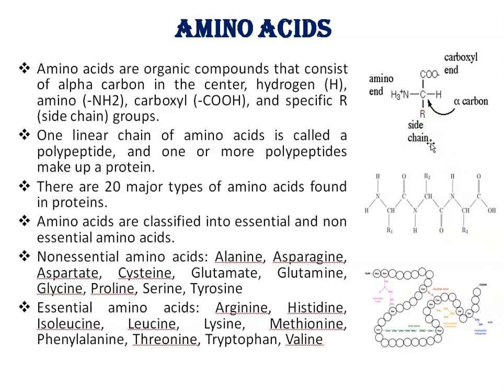The R group contains various chemical structures, and this R group gives each amino acid, and finally each protein, specific characteristics. These features include size, shape, hydrophilicity, hydrophobicity, interaction, clarity, and pH level. Each of these characteristics is crucial for the stability of the proteins.